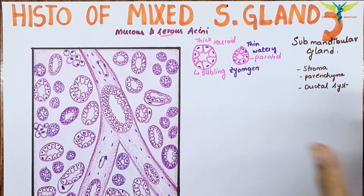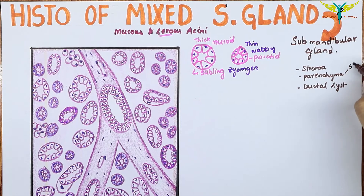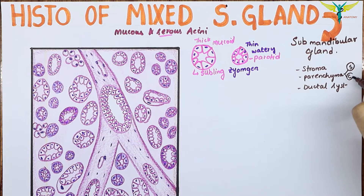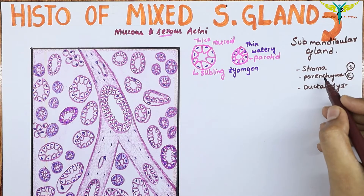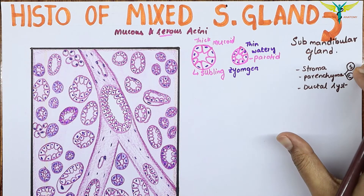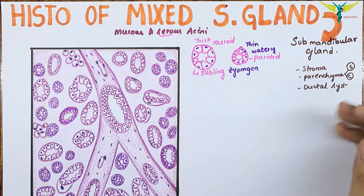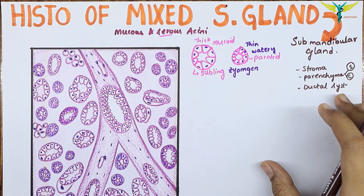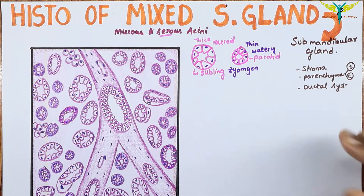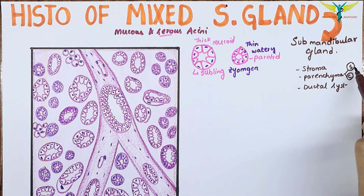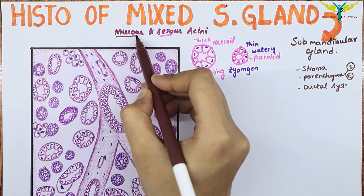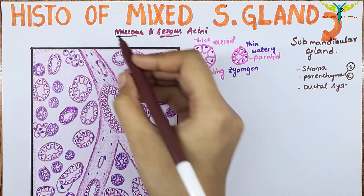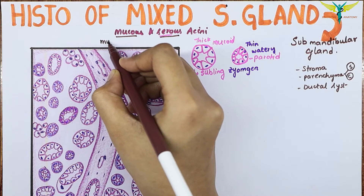The parenchyma contains two components: the secretory part and a conducting part. In the secretory component, it contains closely packed acini and ducts scattered between them, supported by connective tissue that divides the gland into lobules. This secretory part contains the mucous acini, the serous acini, and the myoepithelial cells.